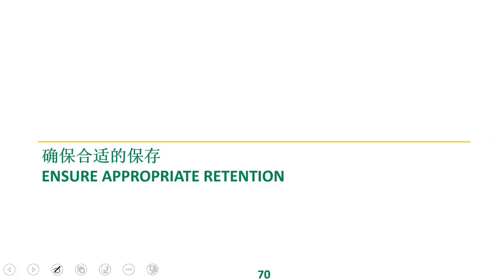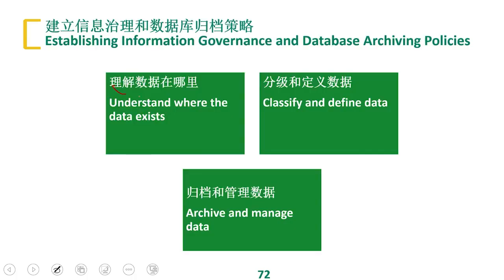This is from the whole data lifecycle — we talked about the points that need to be controlled for data security. After discussing destruction, we go back to appropriate preservation. Where does my data actually exist? From the perspective of cloud data destruction, data in the cloud may have the highest risk. When preserving data, we first need to understand where it actually exists and its classification, because where data is stored is determined by its level.